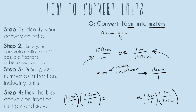If we multiply across the numerator, we get 16 times 100, which is 1,600. We have two centimeters on top, so our unit becomes centimeters squared. The denominator ones multiply to just 1, and meter stays on the bottom. So option one gives us 1,600 centimeters squared over one meter. This is an ugly, gross answer — we don't want this. So this was the wrong choice.